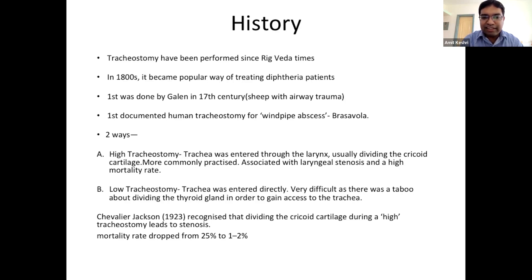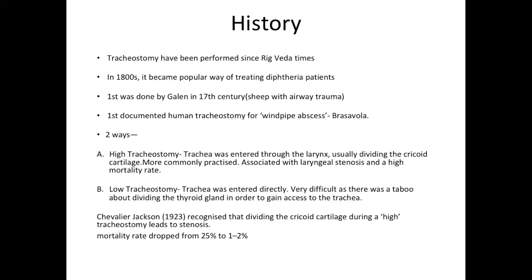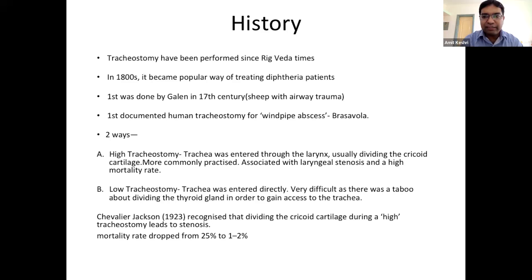Nowadays we directly enter the trachea at the third and fourth tracheal rings. The only structure that comes between is the isthmus of the thyroid gland. If you have already done a thyroidectomy, it is not a problem, but if not, you either have to ligate it or retract it superiorly so that you get access to the trachea.